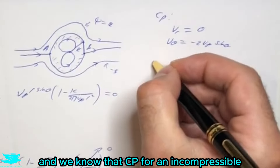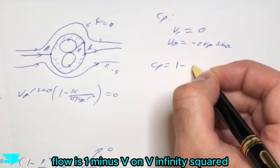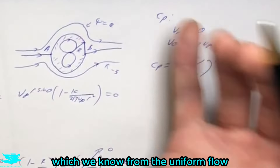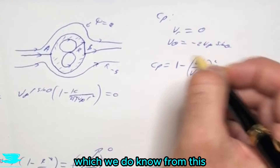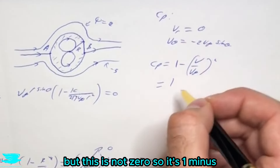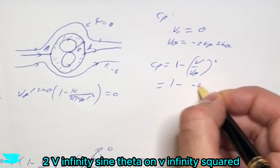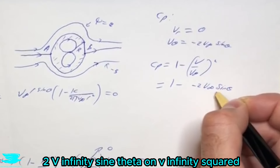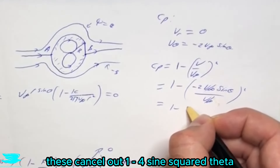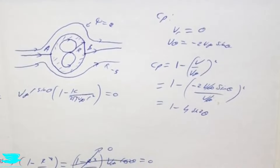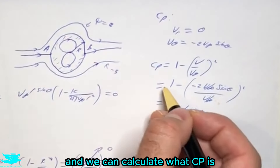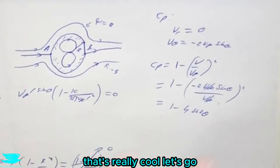For incompressible flow, the pressure coefficient is Cp = 1 − (V/v∞)². Since vr = 0 on the surface, the total velocity V is just vθ = −2v∞ sinθ. Substituting: Cp = 1 − (−2v∞ sinθ / v∞)² = 1 − 4sin²θ. This is a very powerful equation — all we need is θ to calculate Cp at any point along the cylinder's surface.